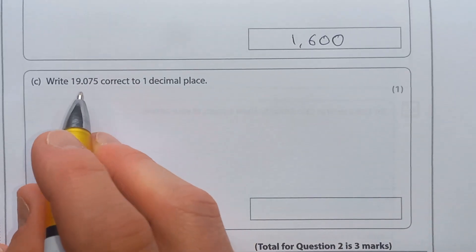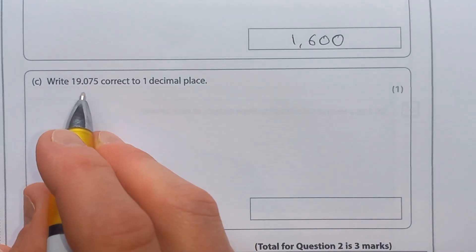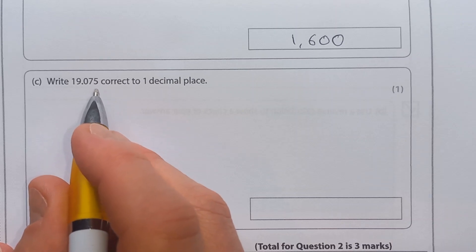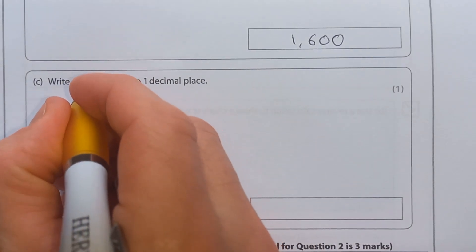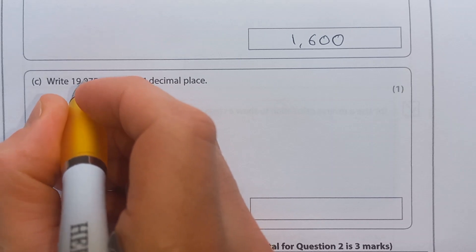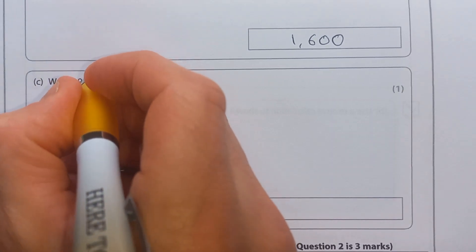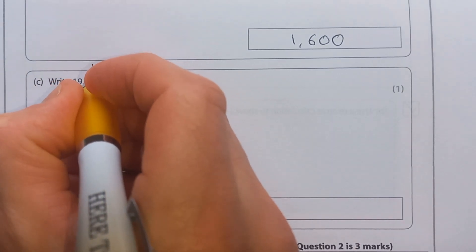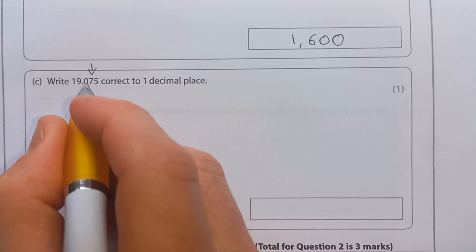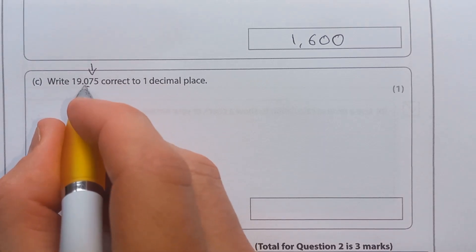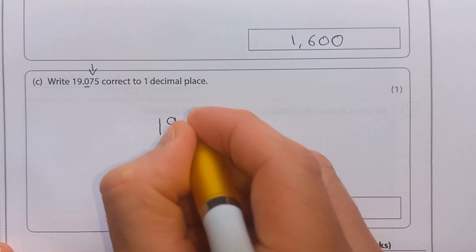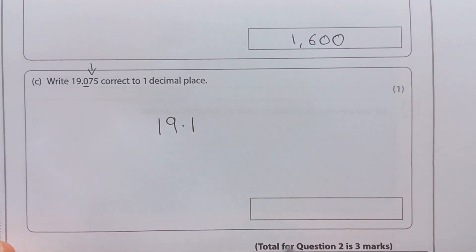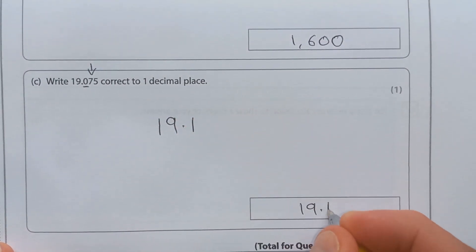Part C: round 19.075 to one decimal place. One decimal place — the first decimal place is the 0, so we look at the digit after that, which is the 7. If it's 5 or more, we increase the 0 by 1. So we're going to end up with 19.1.